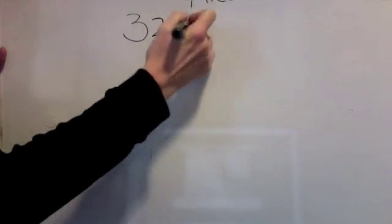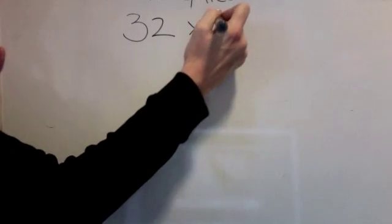Multiplication level 5. We're going to multiply a two-digit number by another two-digit number.